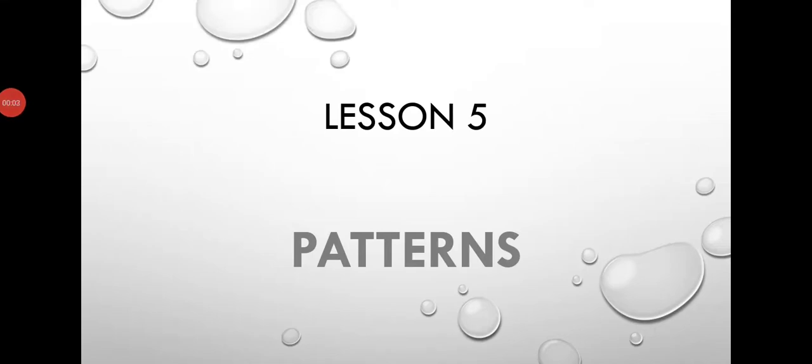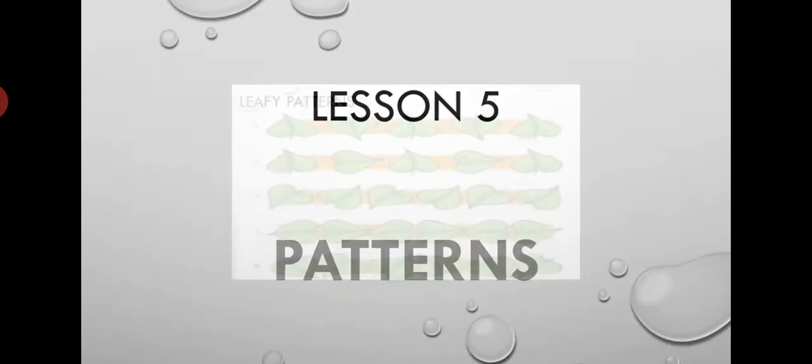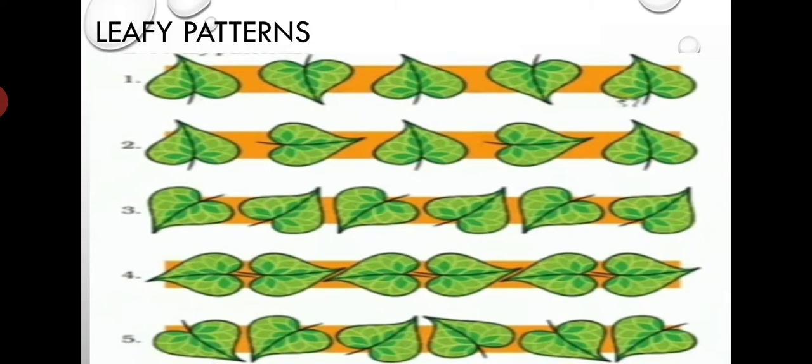Good morning students, continuing our chapter number 5 on patterns. Here leafy patterns are shown using one leaf to make different patterns. See these five leafy patterns where you have taken one kind of leaf, around five, six, or seven leaves, and arranged them in different ways. Look at the first pattern, look at the second pattern, and the third pattern.